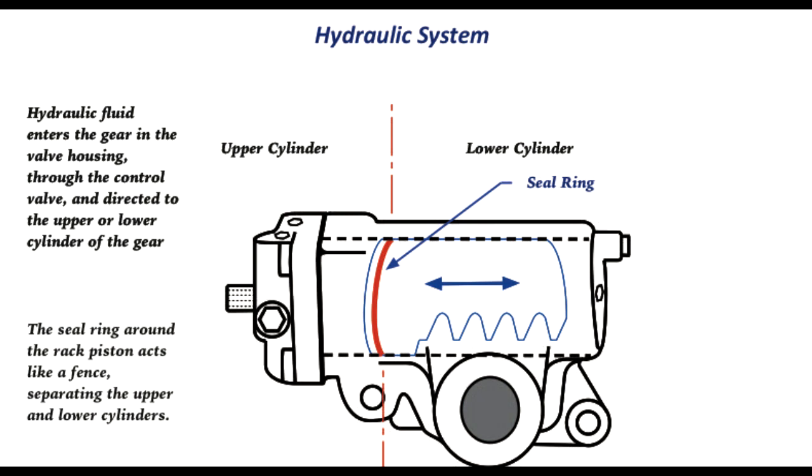Inside the gear around the rack piston is a large seal ring. This seal ring acts like a fence. It separates the upper and lower cylinders and allows pressure to build up on either side, depending on which direction we need assist.